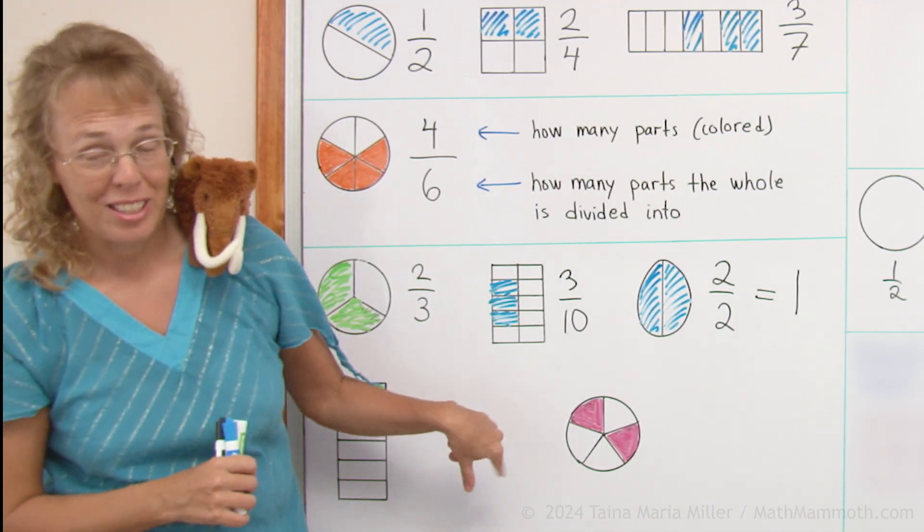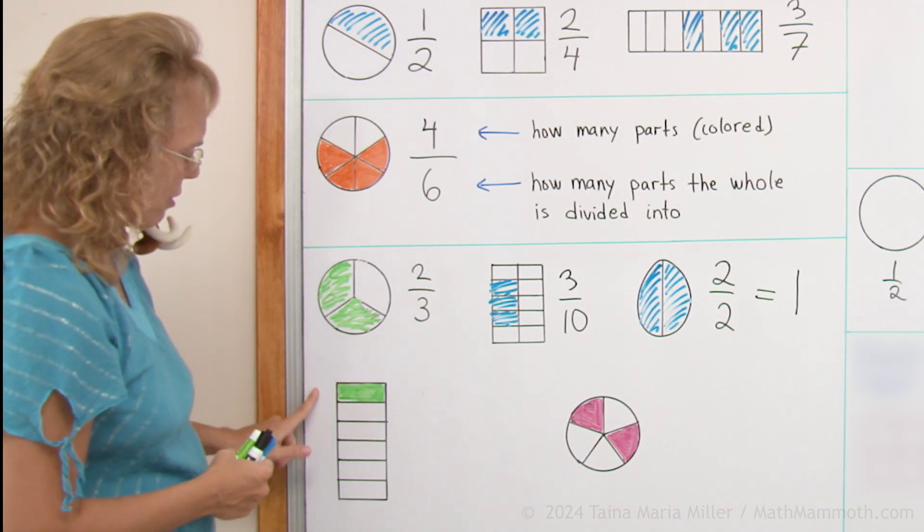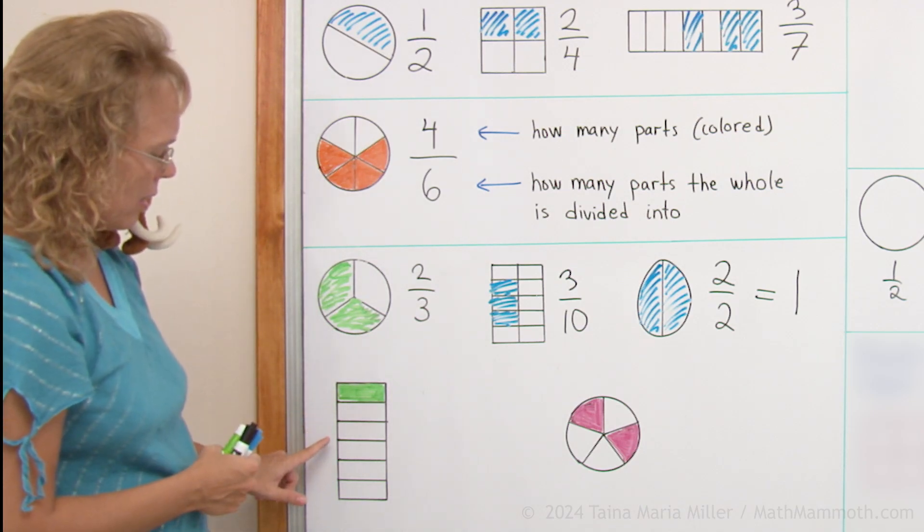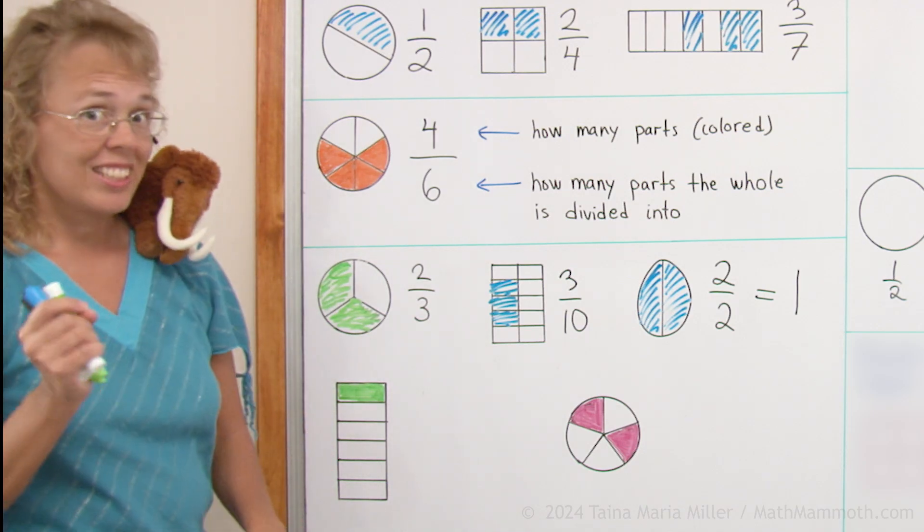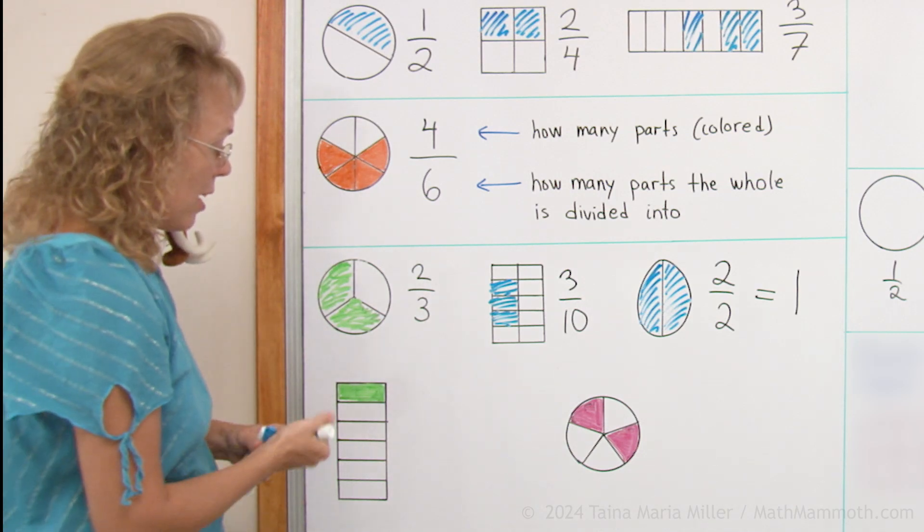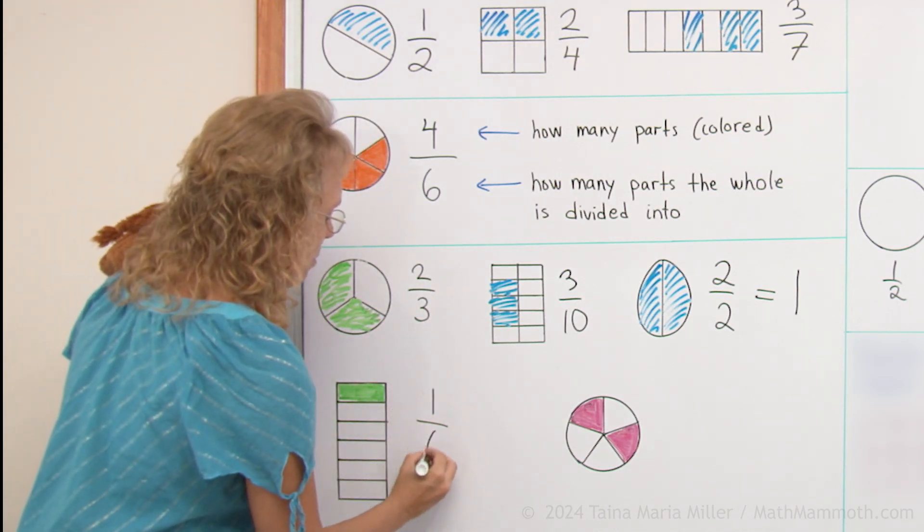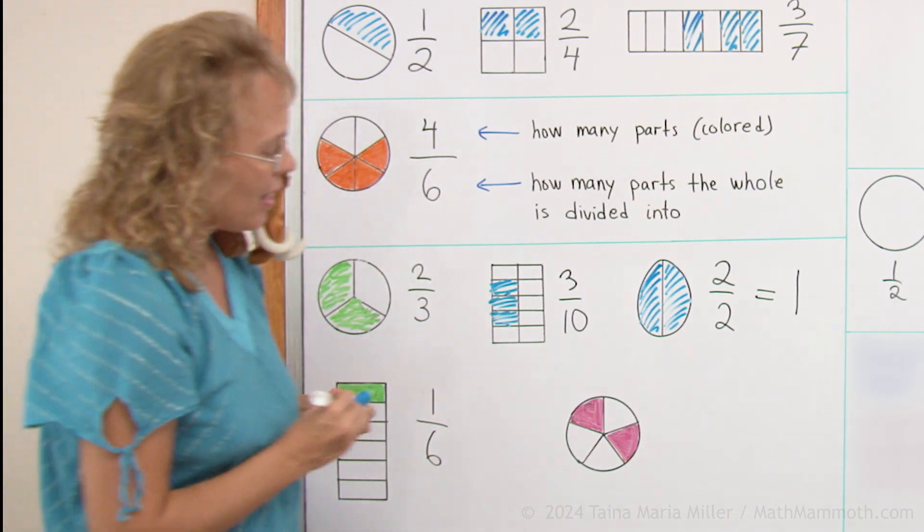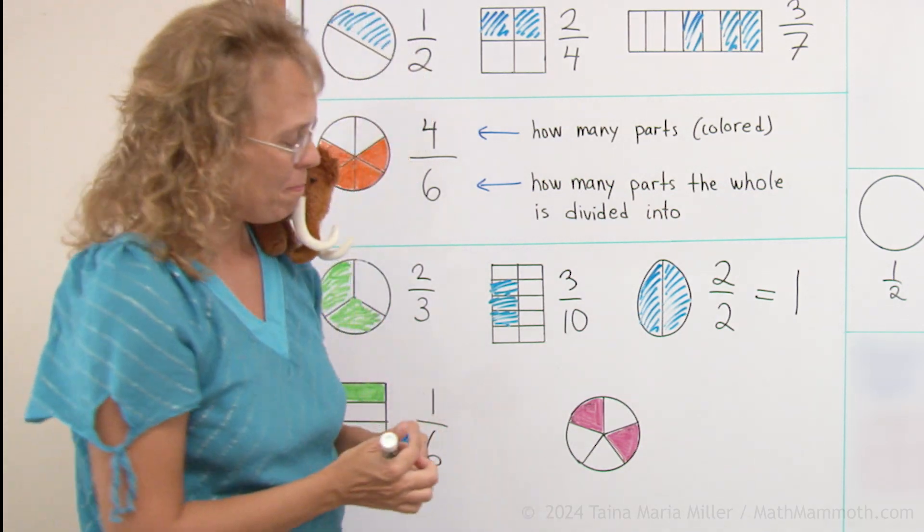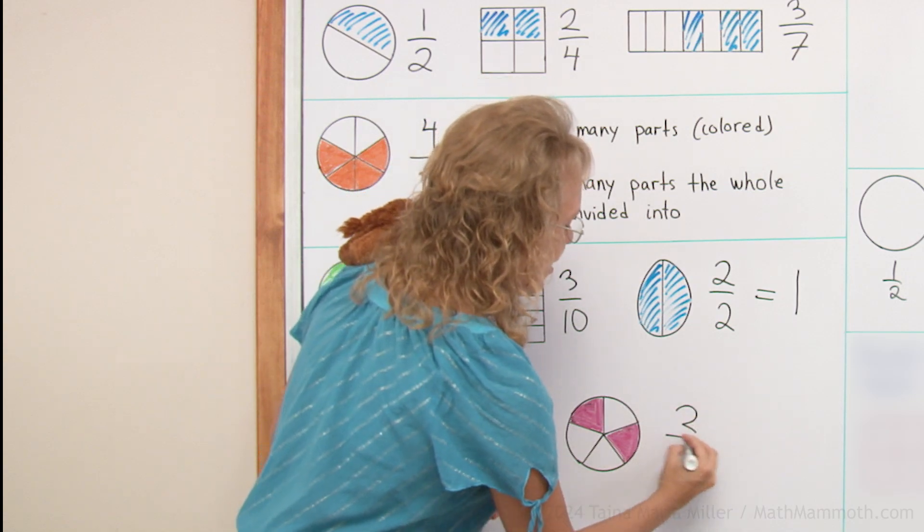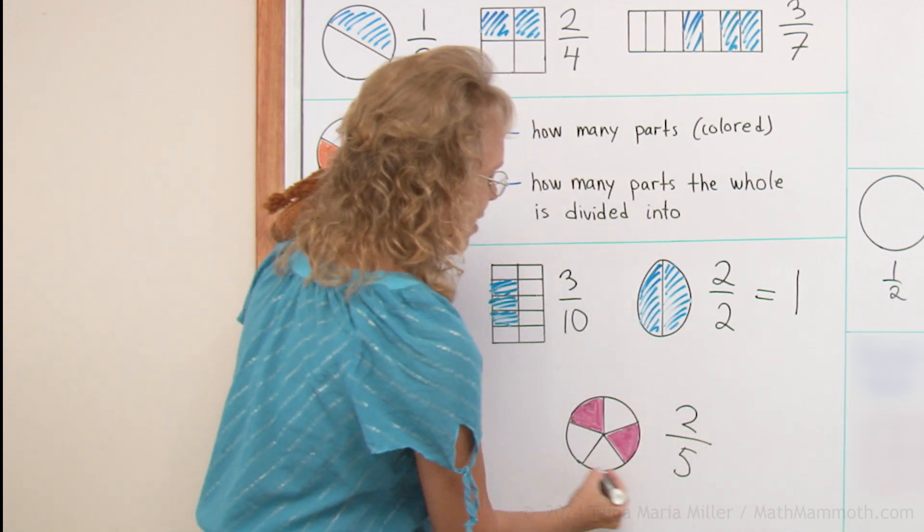Now, our task is to name these two fractions. Can you name this fraction? There are six parts. Six equal parts. One colored, two colored. So, one sixth. And here, two colored, five in total, two fifths.